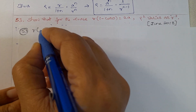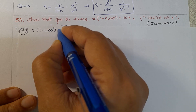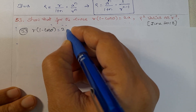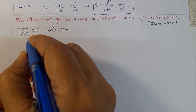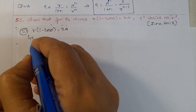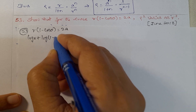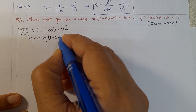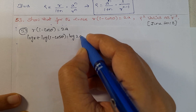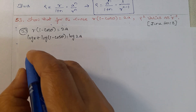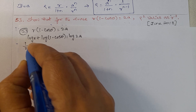For problem number 53, given r(1 - cos θ) = 2a. Take log on both sides: log r + log(1 - cos θ) = log 2a. Next, take differentiation with respect to θ.